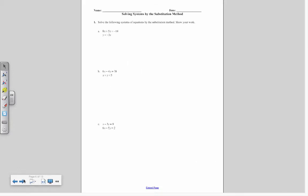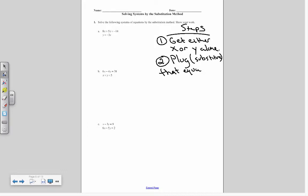So the first thing you need to do is know the steps on how to solve by substitution. The first step is to get either x or y alone. So we want to make sure that x or y is alone.